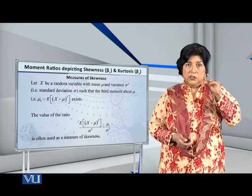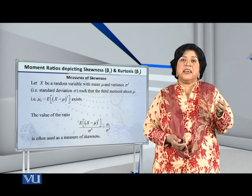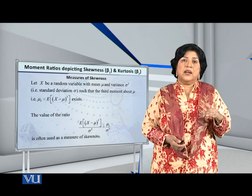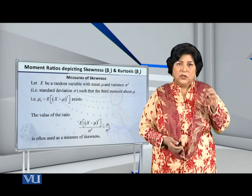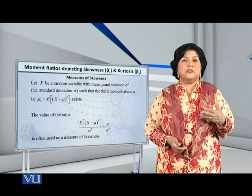Now let's focus on what we are talking about. We are saying that the third central moment, if we are dividing by the standard deviation to the third power, then this ratio can be used as a measure of skewness.